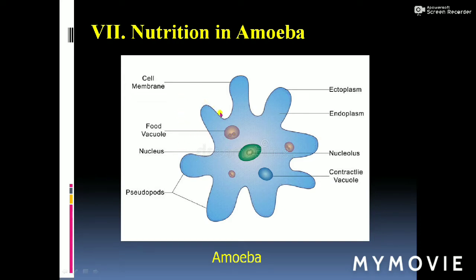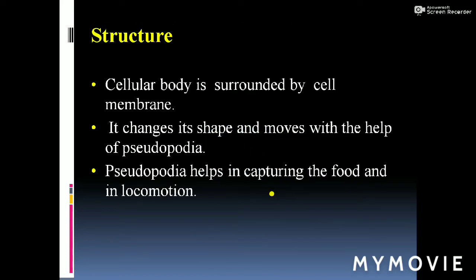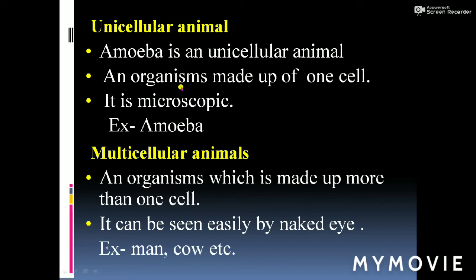Below the cell membrane there is ectoplasm and endoplasm. Amoeba has a special characteristic - it can change its shape into any form. The cellular body is surrounded by the cell membrane, it changes its shape and moves with the help of pseudopodia. Pseudopodia helps in capturing food and locomotion, allowing amoeba to move from one place to another in water.